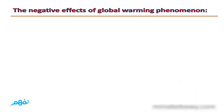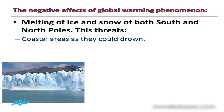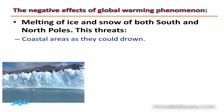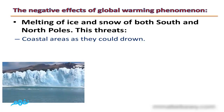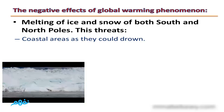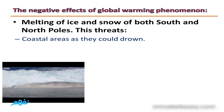The negative effects of global warming include: first, the melting of ice and snow at both the south and north poles. This threatens coastal areas as they could be drowned. Melting ice increases the water level in seas and oceans, causing the flooding of coastal areas.